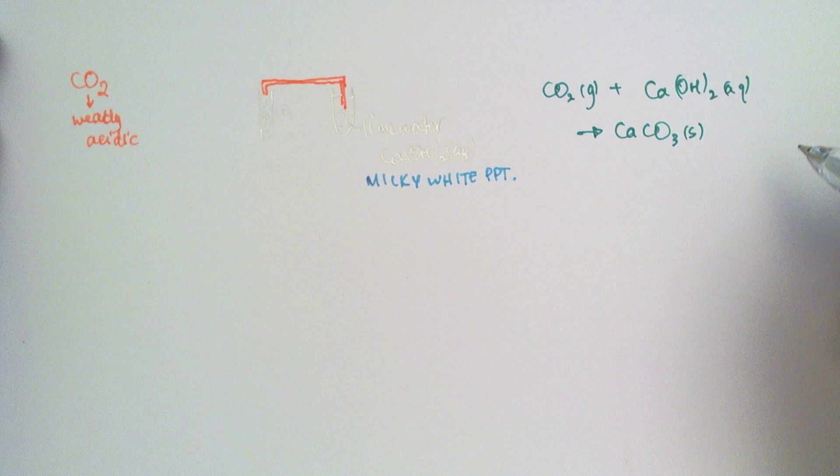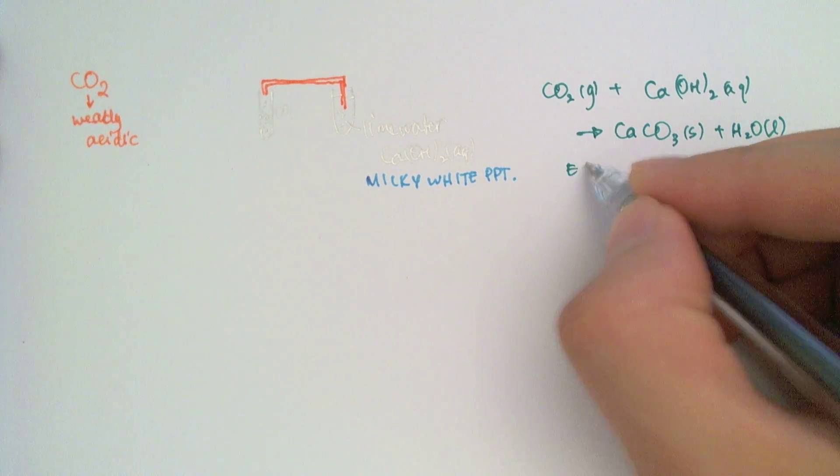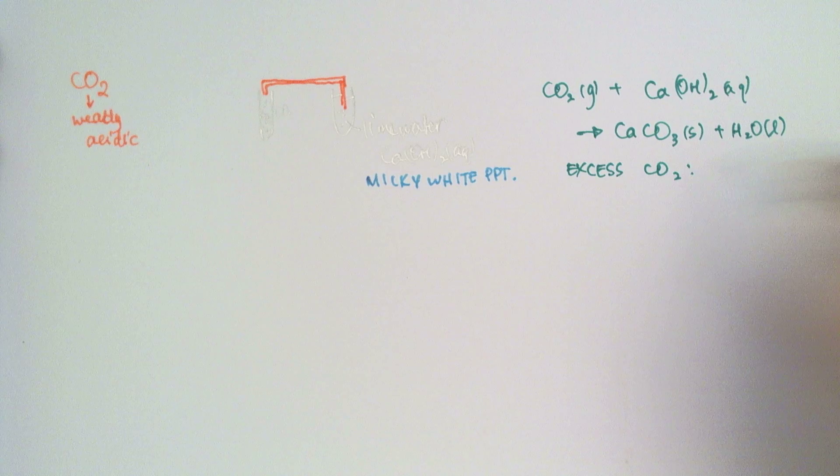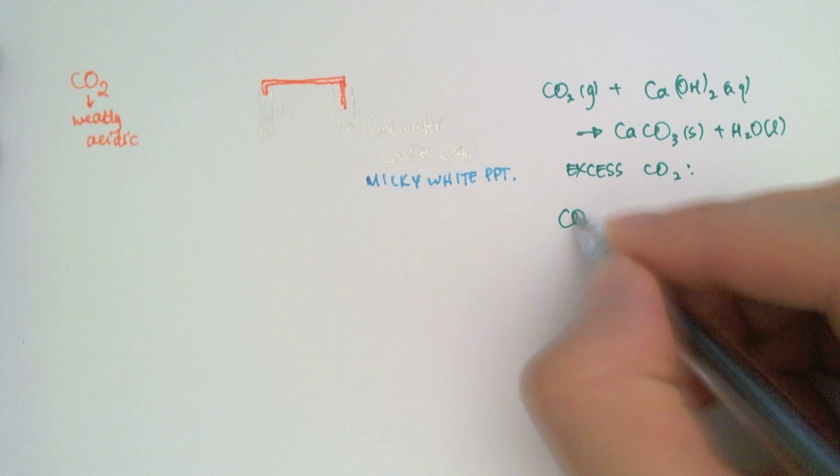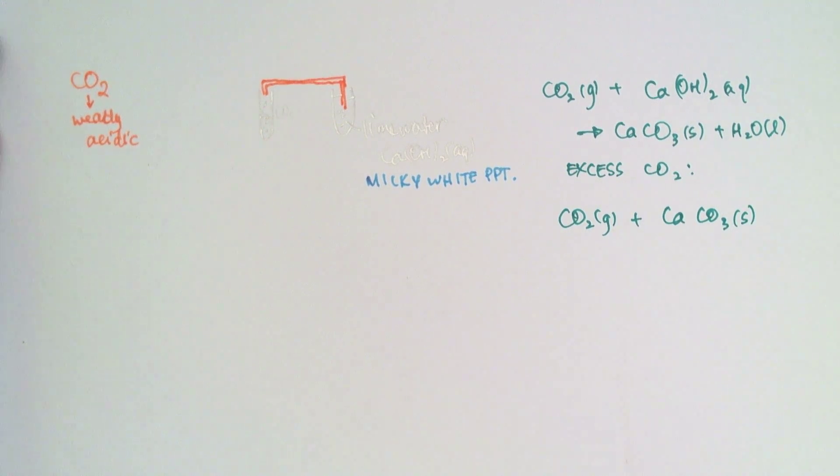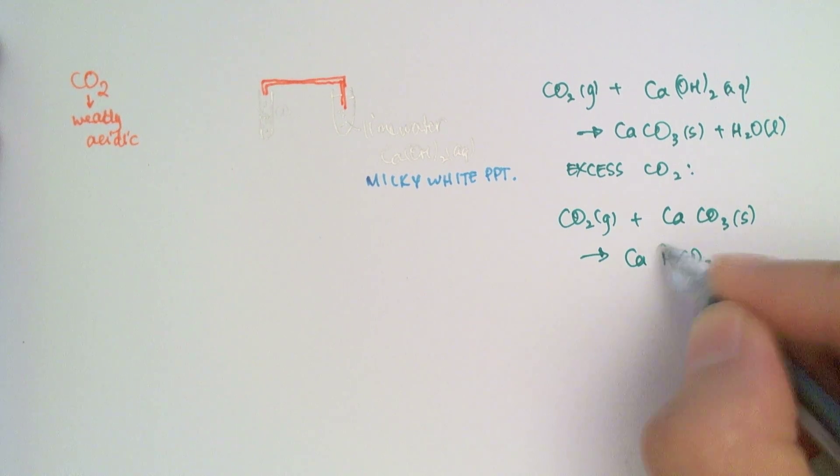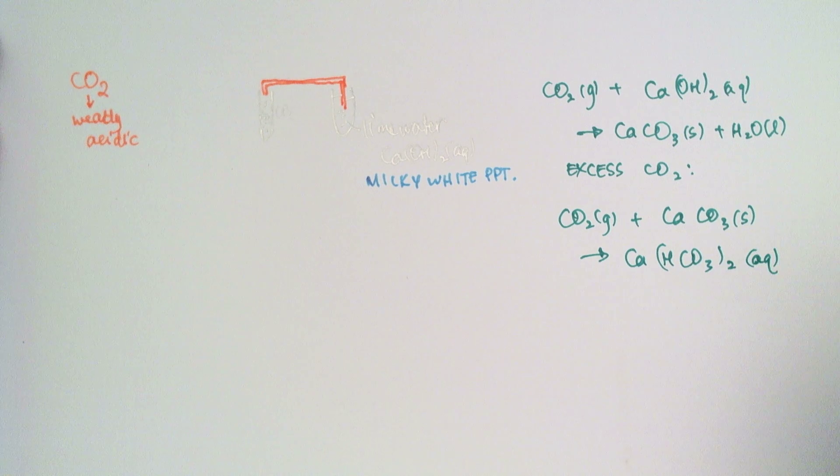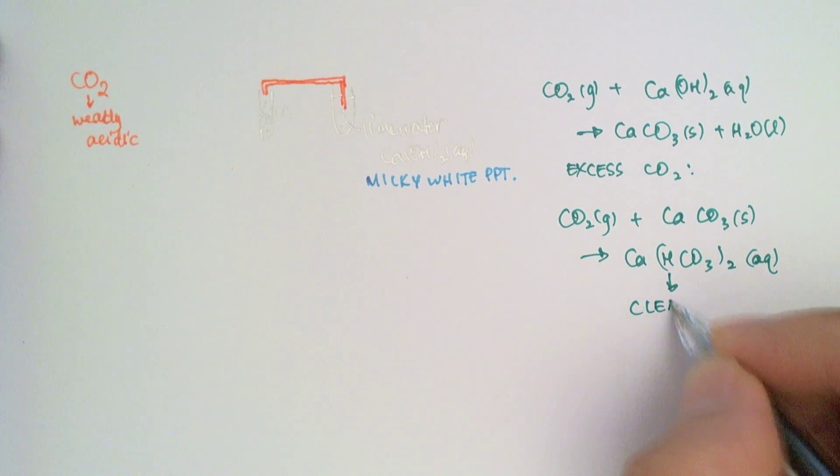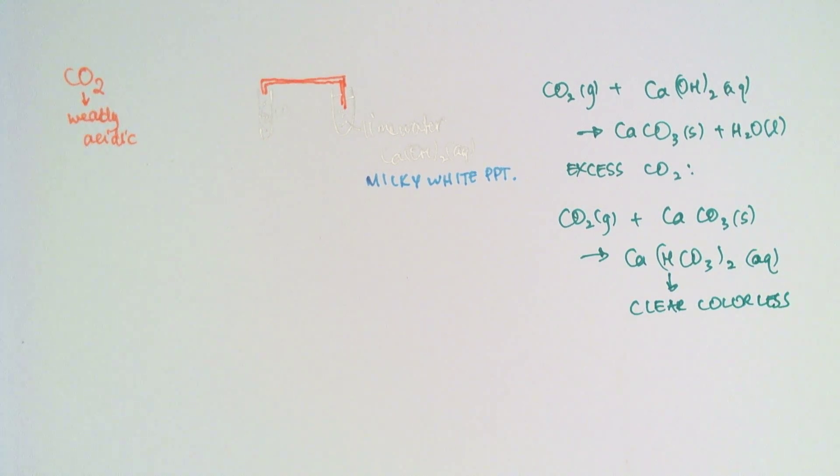So you have calcium carbonate precipitate formed with some water. Now it's important not to overdo this test. And the reason is because if you add excess CO2, what happens is that the excess carbon dioxide will actually react again with that white precipitate to give me calcium bicarbonate, and that's a clear color solution. So if you do it too quickly, you might not see the precipitate form at all.